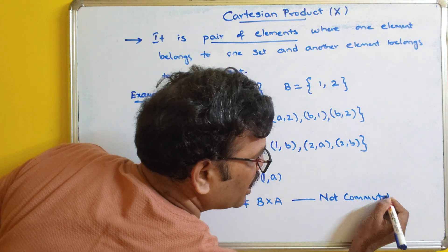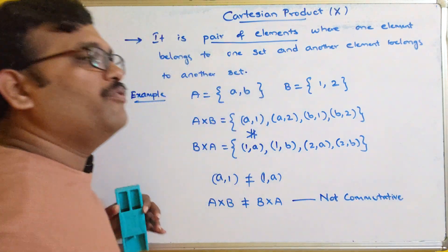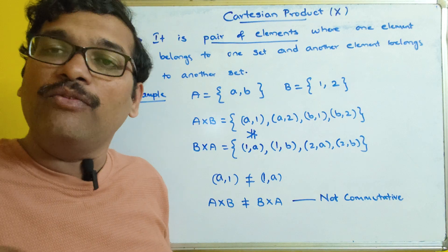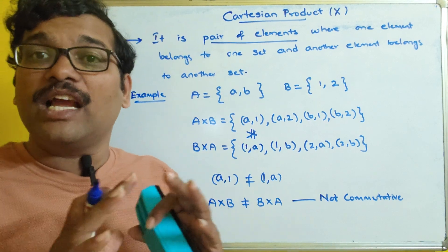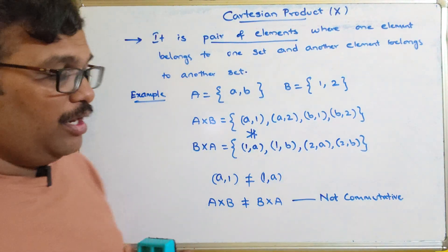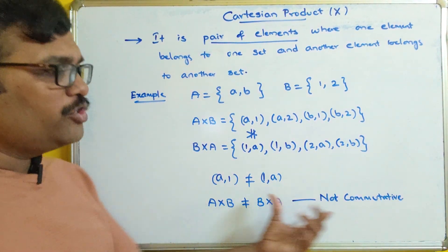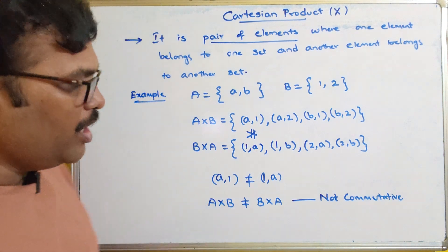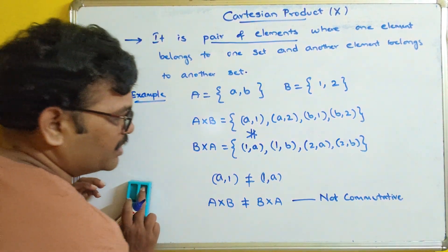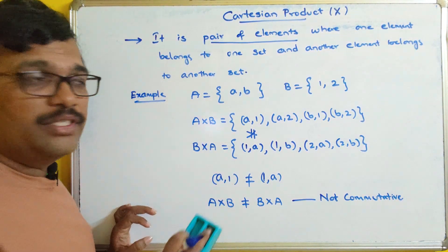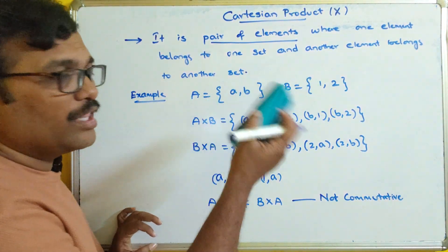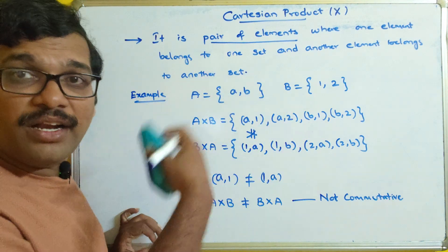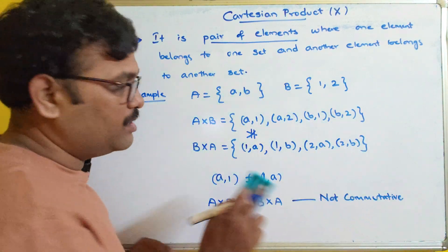So for the Cartesian product, A cross B is not equal to B cross A, and we can say it is not commutative. We have seen commutative properties before — if A union B equals B union A, it is commutative. Here it is not equal, so the Cartesian product is not a commutative operation. It is just giving pairs of elements where one belongs to one set and the other belongs to another set.